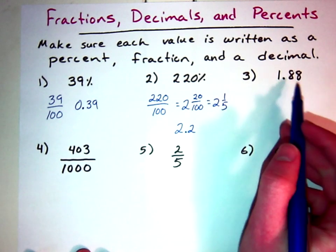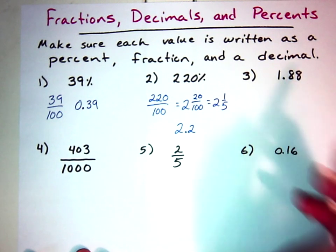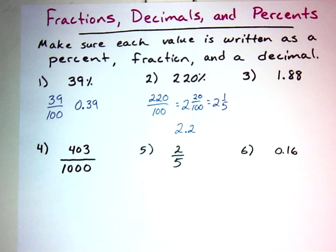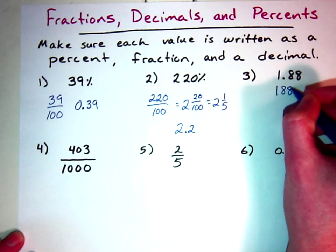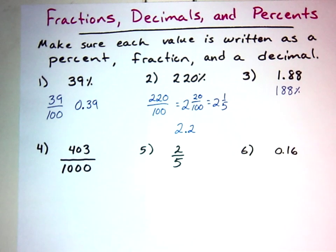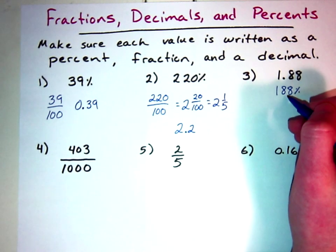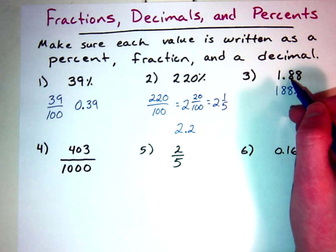For number three, I've got 1.88. For a decimal to a percent, you move it two times to the right, which gets us 188 percent. We could also do the fraction multiple ways — we could take the percentage and turn it into a fraction, or take the decimal and turn it into a fraction.